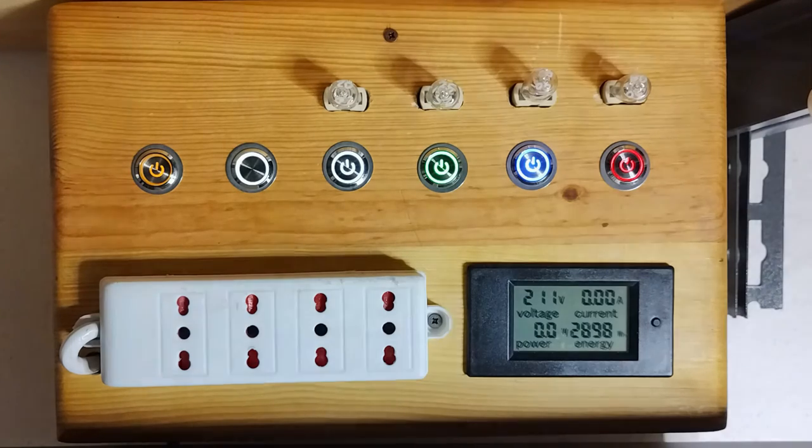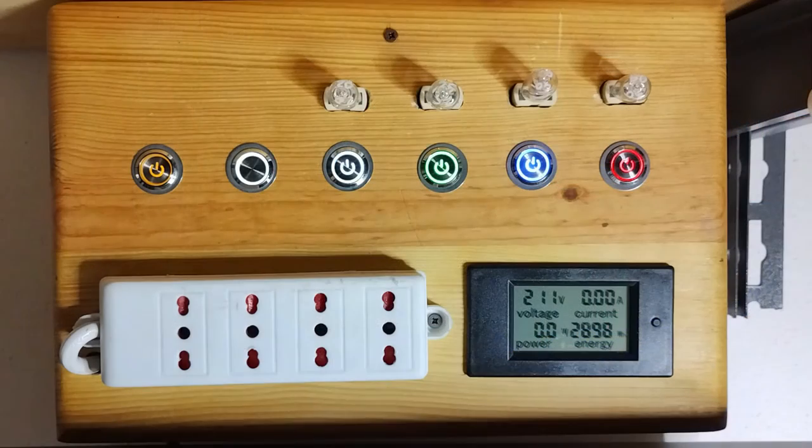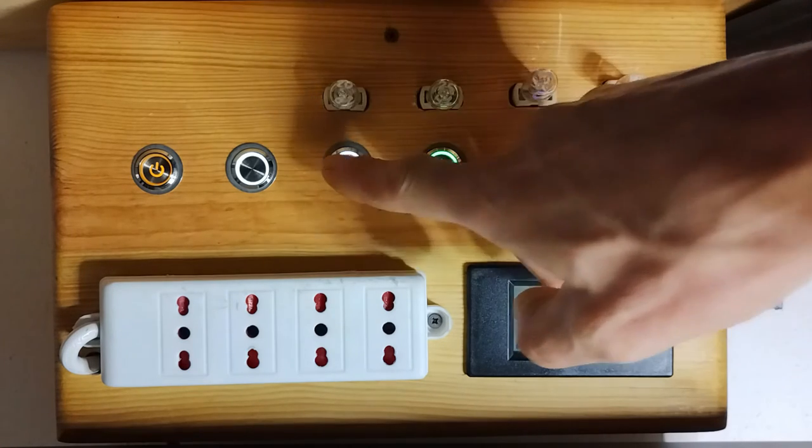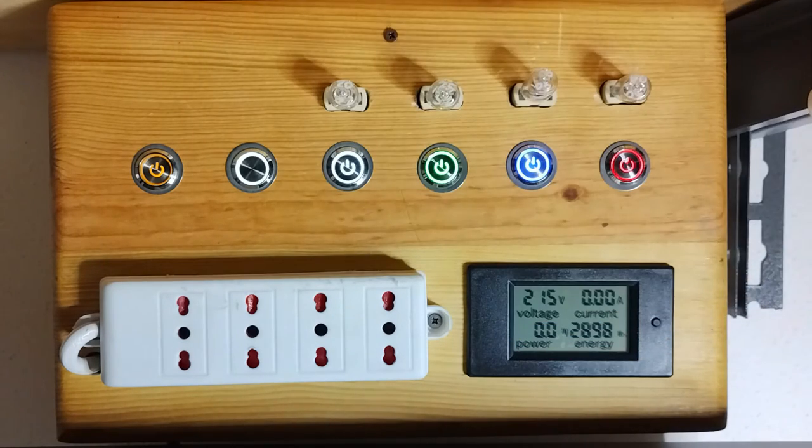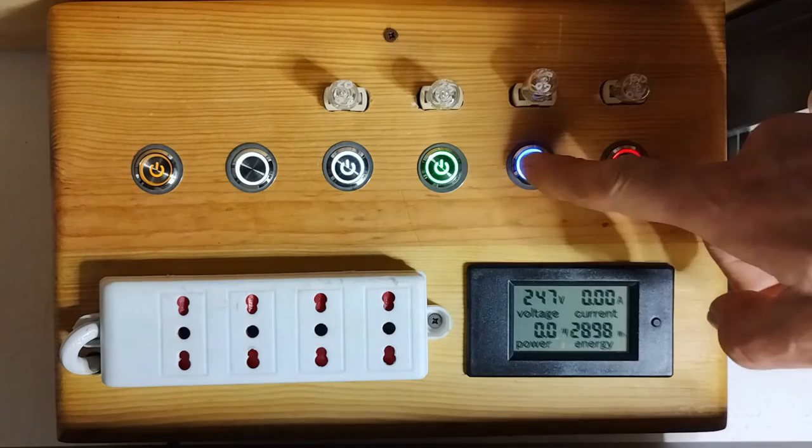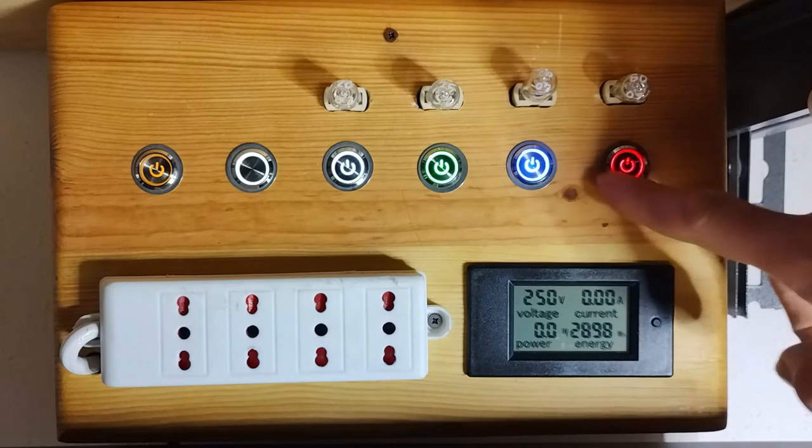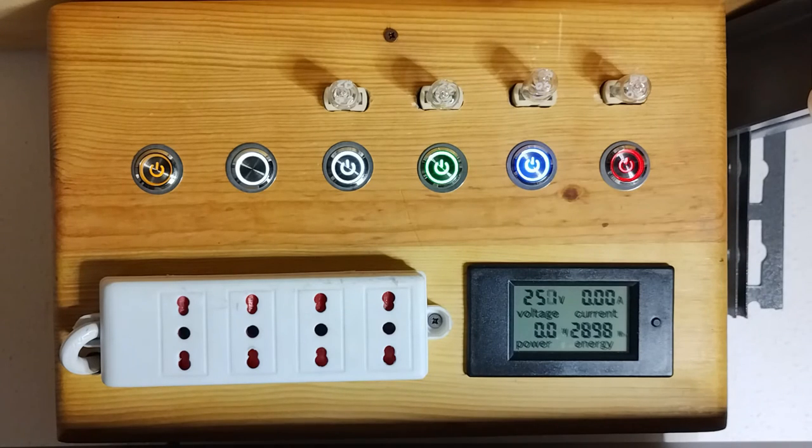There are already in the circuit 2 20 watts current limiting light bulbs in series. Another 20 watts light bulb is added in parallel to reduce the current restriction. Added 25 watts. Added 40 watts. Added 60 watts.